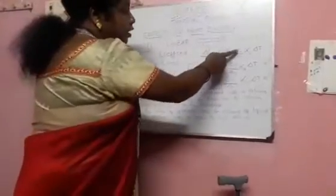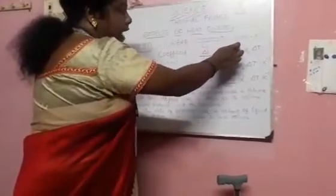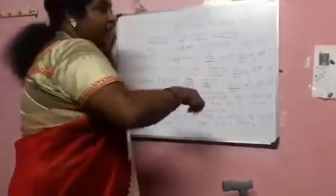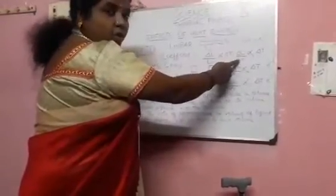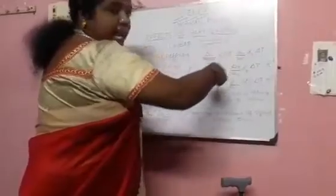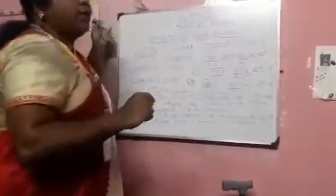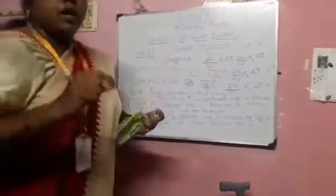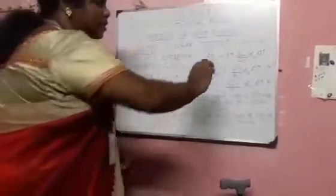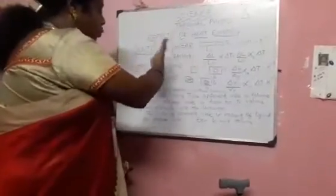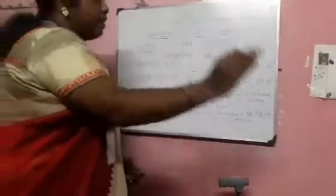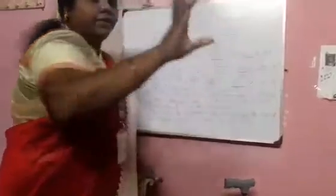Now we see the units. For length, the same unit appears in both numerator and denominator — L divided by L — so they get cancelled. For temperature, the unit is Kelvin. So the unit of the coefficient — whether linear, superficial, or cubical — is Kelvin inverse (K⁻¹).